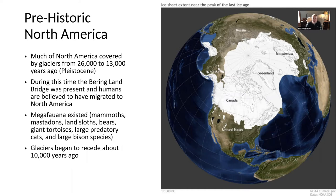Anywhere from 26,000 to 13,000 years ago in the Pleistocene period, much of North America was covered by glaciers. This is the age of megafauna — mammoths, mastodons, giant bears, and ground sloths. About 10,000 years ago, the glaciers began to recede. But if you look at this map, much of the lower Great Plains and the southeastern United States were completely unaffected by glaciation and were far away from glaciers.